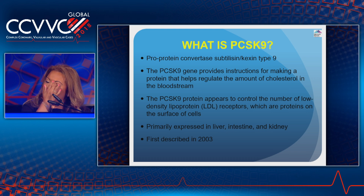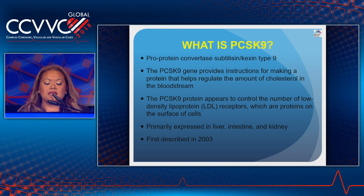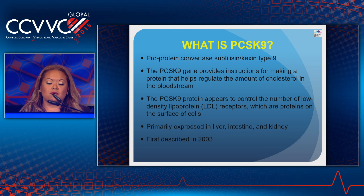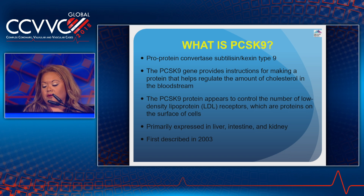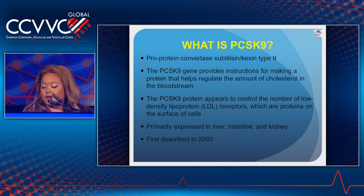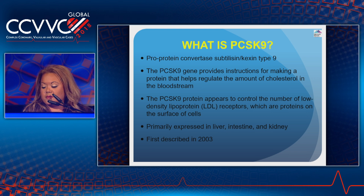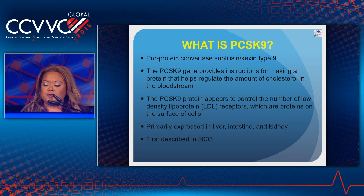Let's talk about PCSK9. PCSK9 is pro-protein convertase subtilisin kexin type 9. The PCSK9 gene provides instructions for making a protein that helps regulate the amount of cholesterol in the bloodstream. The PCSK9 protein appears to control the number of LDL receptors on the surface of cells, which play a critical role in regulating blood cholesterol levels. The receptors bind to LDL particles, the primary carriers of cholesterol in the blood. LDL receptors are particularly abundant in the liver — the organ responsible for removing most excess cholesterol from the body. Studies suggest that the PCSK9 protein helps control blood levels by breaking down LDL receptors before they reach the cell surface.